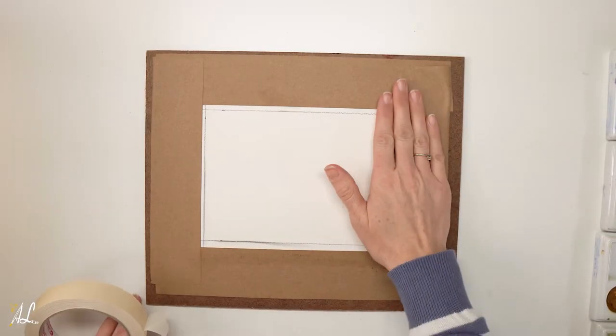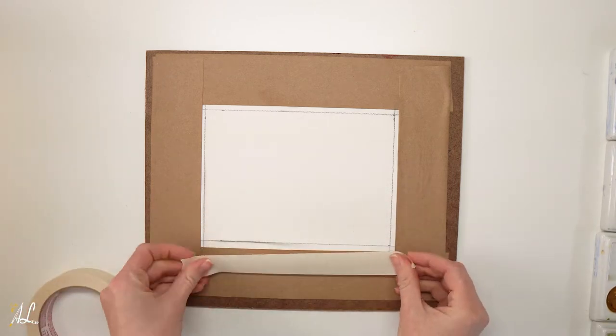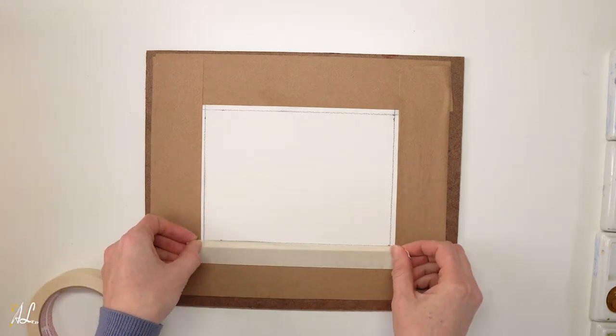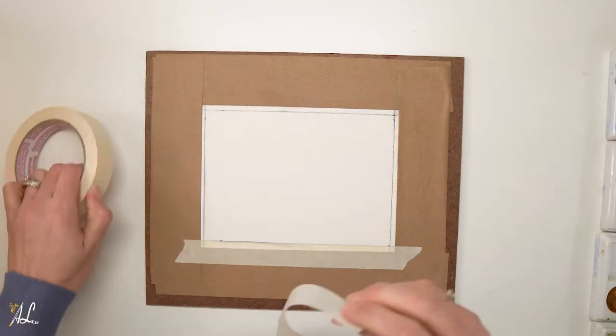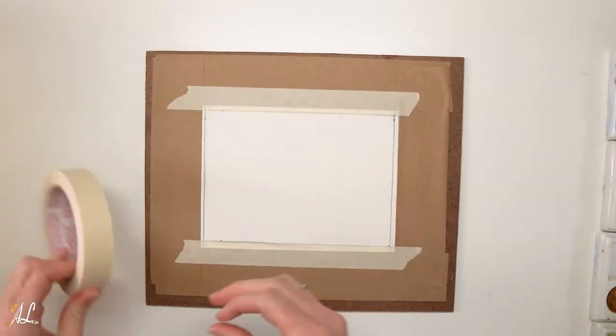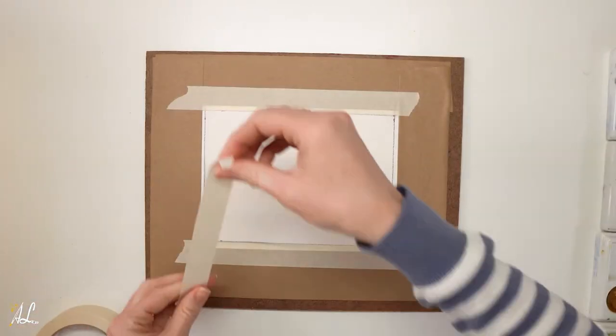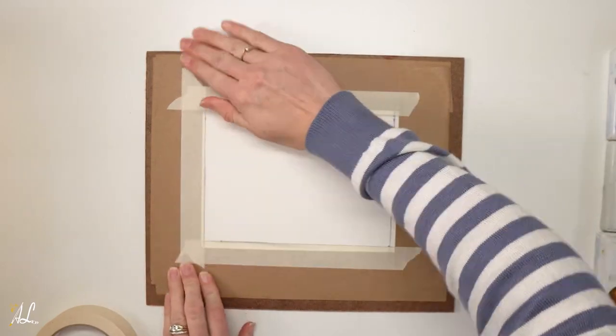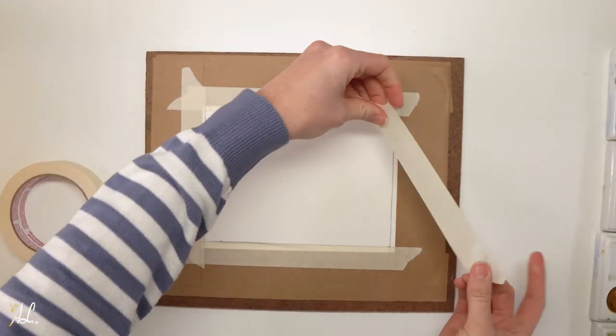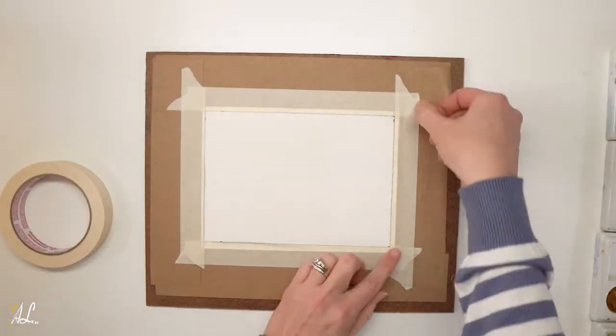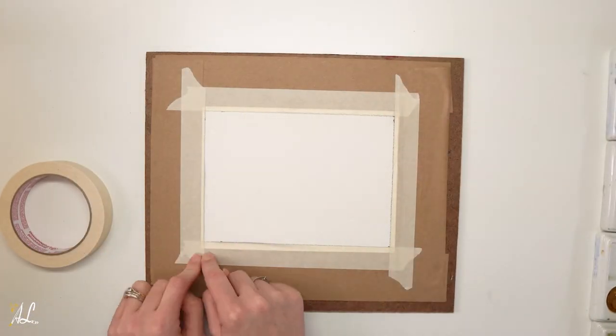Once our paper is dry, we can go ahead and add our masking tape and we will put it up against the measurements that we made. We want this little tiny lip or border so when we mat our paintings, we have a little bit of an edge there that it'll be able to go around the painting and look really nice.